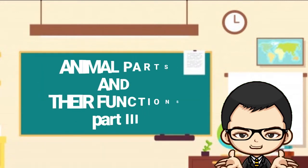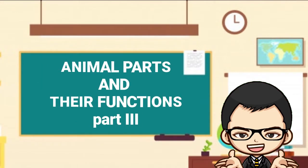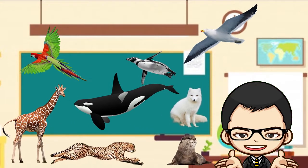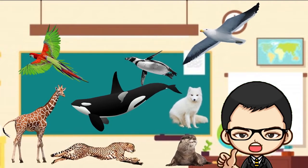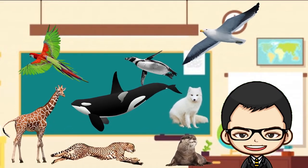In the previous lesson, we have learned about different functions of legs, arms, fins, tail fins, and many other animal parts. We have observed that similar animal parts can have different functions for different animals.